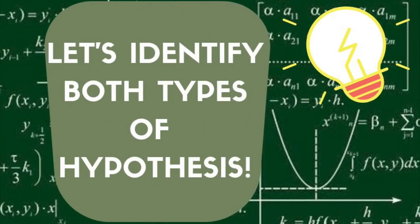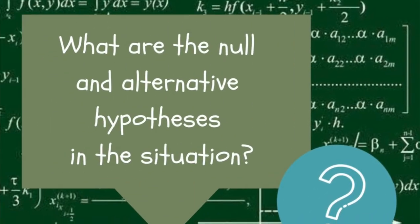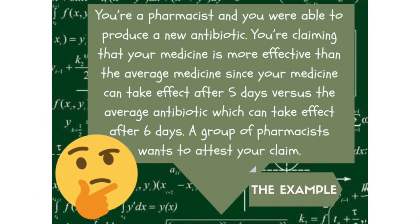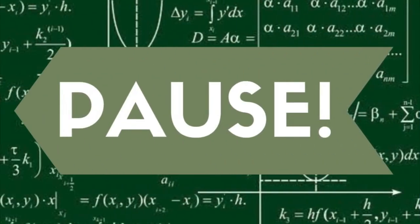Now, let us identify the null and alternative hypothesis in the situation given. You are a pharmacist and you were able to produce a new antibiotic. You are claiming that your medicine is more effective than the average medicine, since your medicine can take effect after 5 days versus the average antibiotic which can take effect after 6 days. A group of pharmacists wants to attest your claim. Before we show the answers, try pausing the video to answer the given problem.